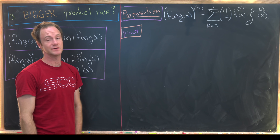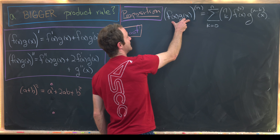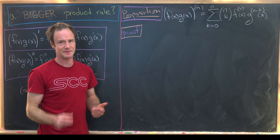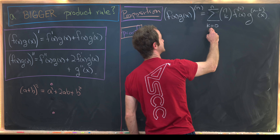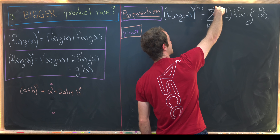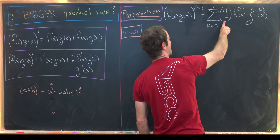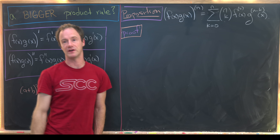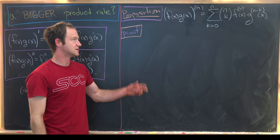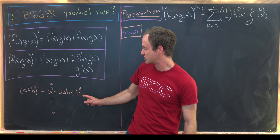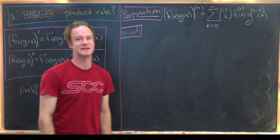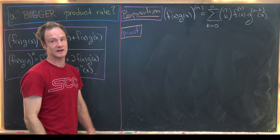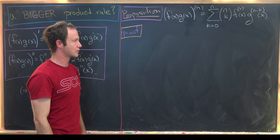Here's how it goes: if we take the nth derivative of the product f times g — assuming these are sufficiently differentiable — we get the sum as k goes from 0 to n of (n choose k) times the kth derivative of f times the (n−k)th derivative of g. That looks exactly like binomial expansion, where exponents are replaced by derivatives. Okay, so let's prove this.